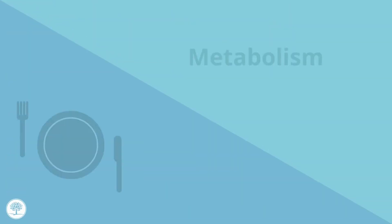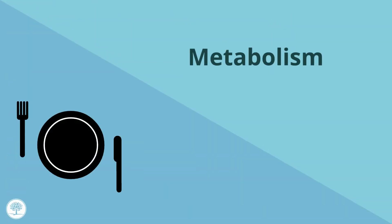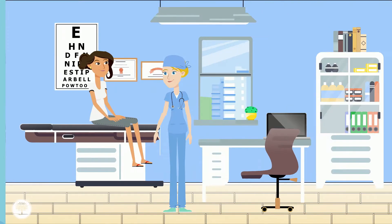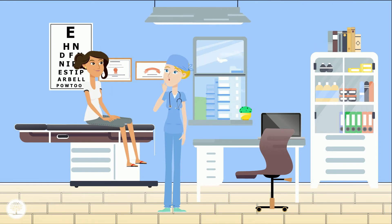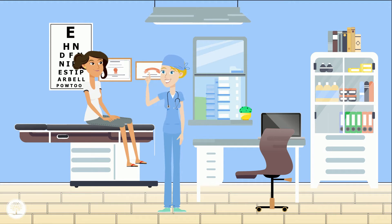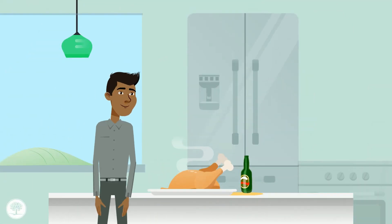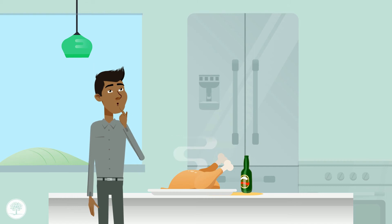Metabolism can also affect your BAC, as can your medical condition. For example, if your liver is not working well — the liver is the primary organ that metabolizes alcohol or ethanol — that will impact BAC. Also, if your stomach is full of food or drink, alcohol will be absorbed slower than if you were drinking on an empty stomach.